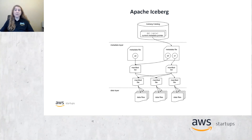Apache Iceberg is a high-performance table format typically used for huge analytic tables. What makes it effective is how it stores records in object storage — managing a large collection of files and tables while supporting modern analytical data lake operations. Apache Iceberg contains three layers: at the top, a catalog that stores metadata pointers tracking the current state of the table; then a metadata layer storing metadata at a certain point in time, like a snapshot; and a manifest list with a list of manifest files, each containing metadata about data files, partitioning, columns, etc. This structure makes querying fast by allowing pruning of which files need to be scanned.